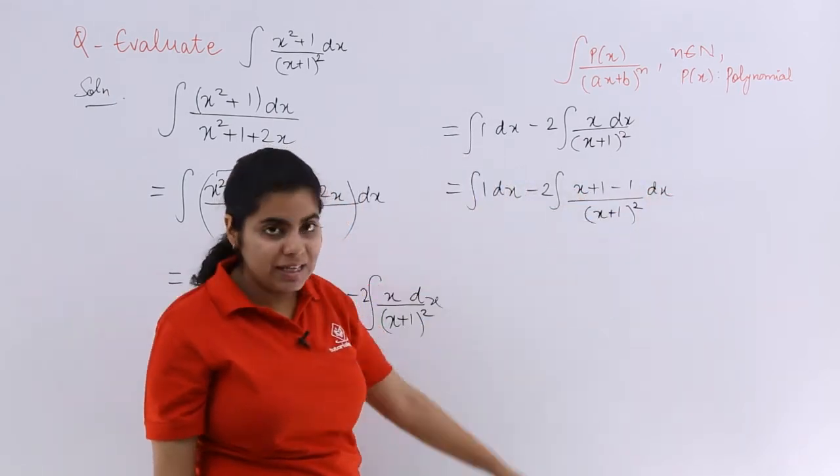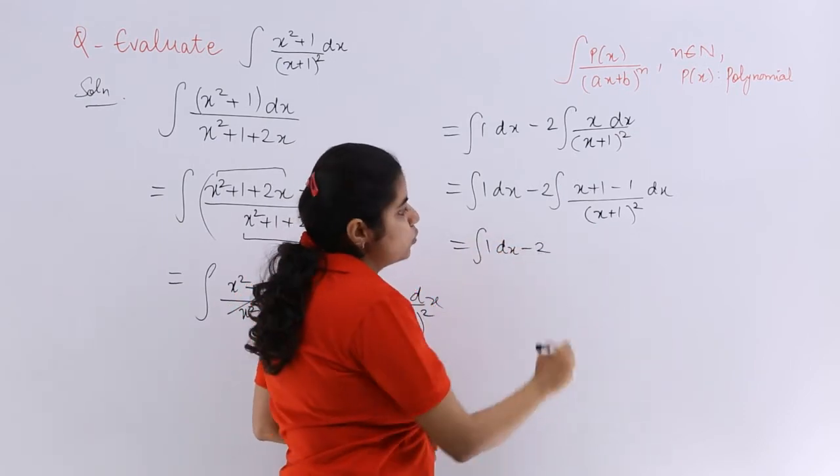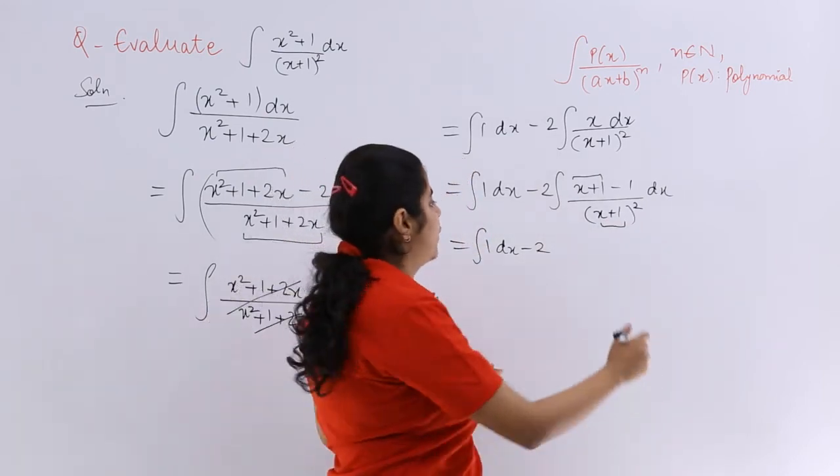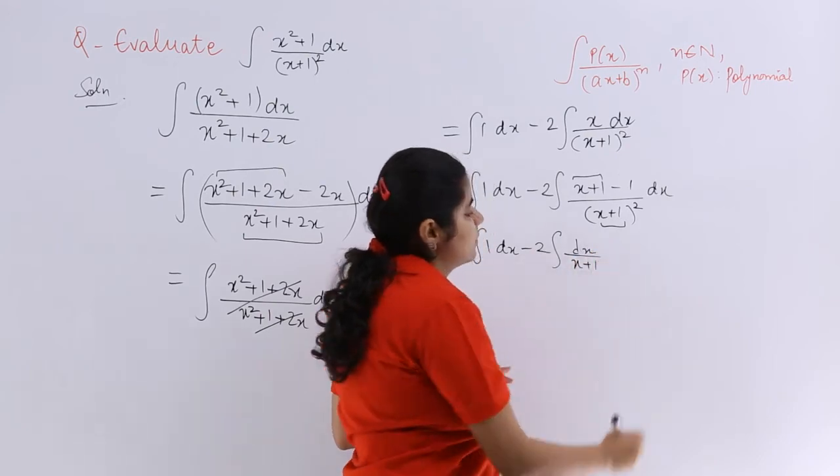Now what is it? Now it is very easy for us. Similar to the previous steps that we did, minus 2 already there. Here it is x + 1, here it is x + 1. Not a big deal for us. These things getting cancelled. It becomes 1 upon (x + 1) dx.